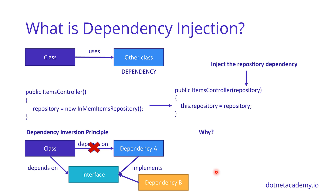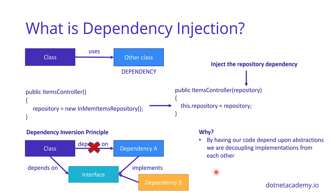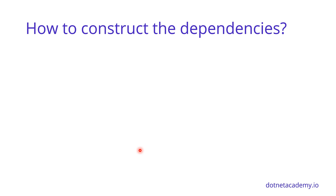So why do we want to do this? By having our code depend upon abstractions, we're decoupling implementations from each other. This gives us much more freedom in terms of moving around these dependencies without ever having to touch our class. This makes the code cleaner, easier to modify, and much easier to reuse. And by the way, it's also much easier to test.